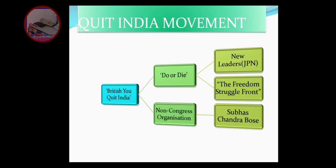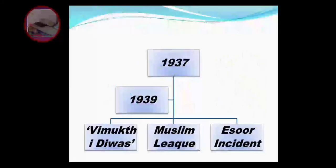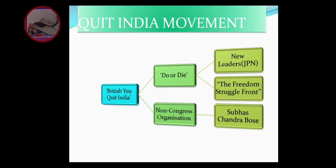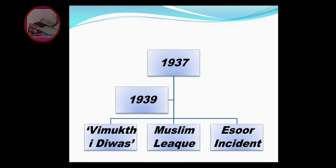Gandhi said 'Do or Die' - you are not supposed to sit and just say you need freedom. You have to stand and fight. Similarly, if you want something in your future, you have to stand and learn - fight for yourself. The Quit India situation started. Then non-Congress organizations arose. Subhash Chandra Bose went against Gandhi - he said Gandhi was being lenient towards the British. Subhash Chandra Bose said no, we need extra force to fight for freedom.